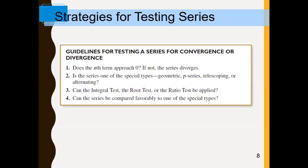The only way you would ever get to number two in this list is if the terms are going to zero. Then the question simply becomes: are the terms going to zero fast enough? That's what all the other tests are designed to detect. So is the series one of the special types? Is it geometric? Is it a P-series? I would even add in the logarithmic P-series, which had the same convergence requirement as the P-series. Telescoping or alternating — if it's one of those, then you kind of know how to proceed.